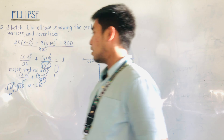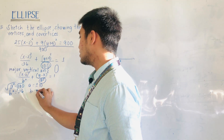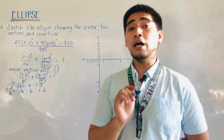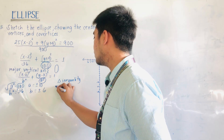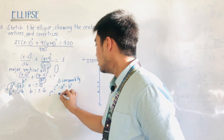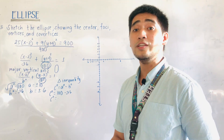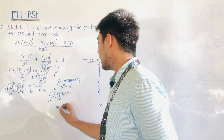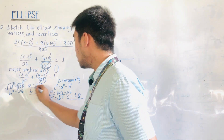Therefore, b² equals 36, and taking the square root, b equals ±6. Now we use the relationship c² = a² minus b² to find c. So c² equals 100 minus 36, which is 64. Taking the square root, c equals ±8. These are now the values of a, b, and c.